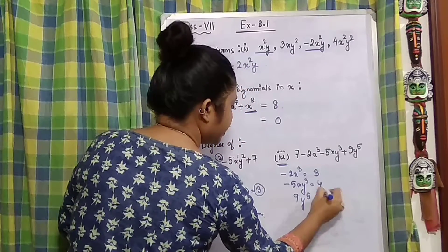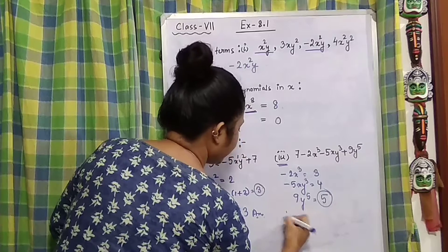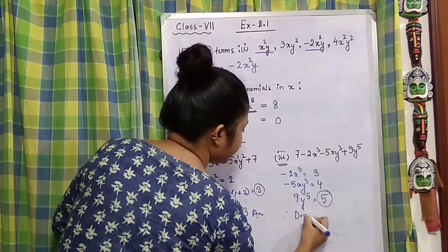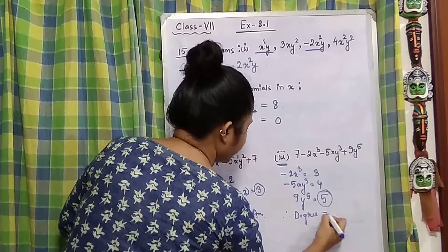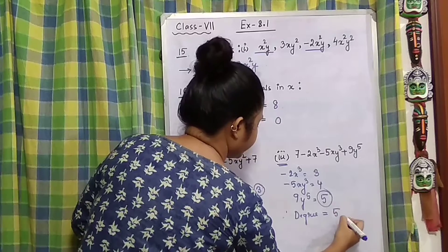So which is the highest? Here, 5 is the highest. Therefore, the degree of polynomial will be 5.